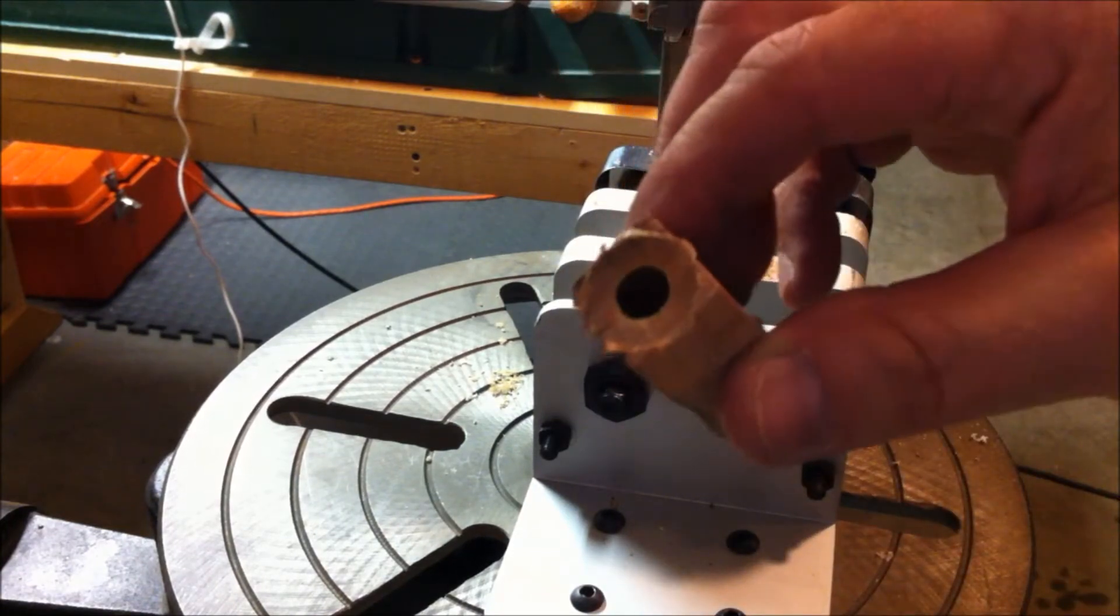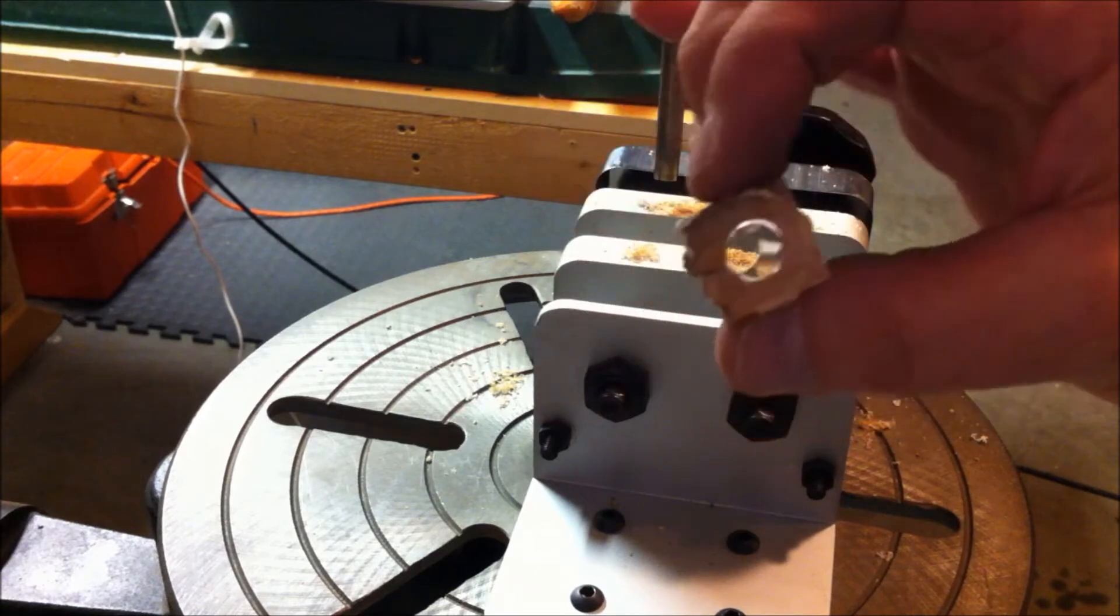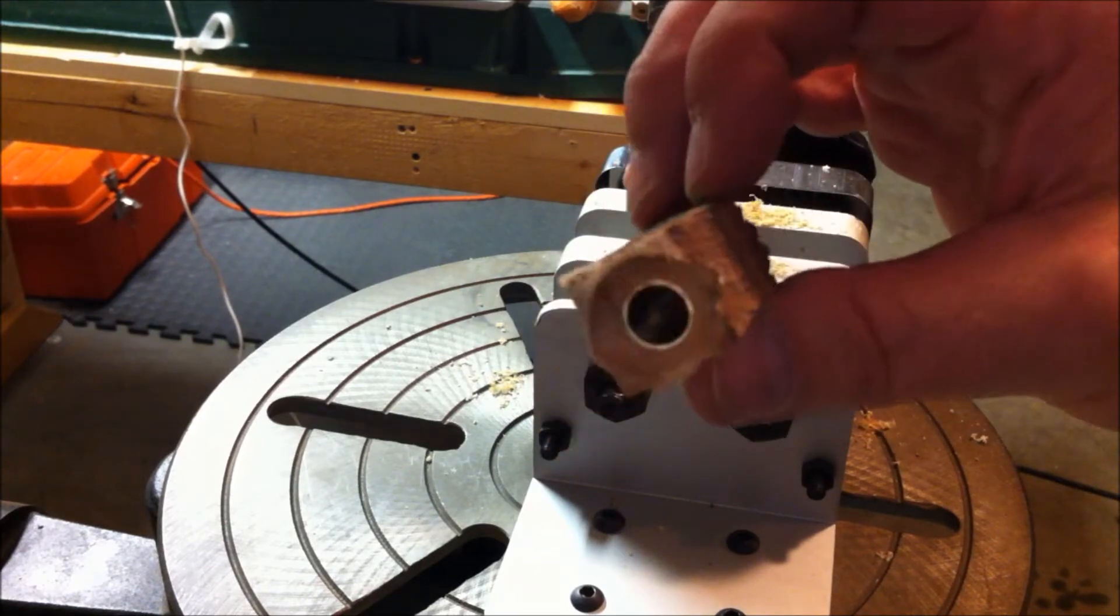Alright, and there we have it. Both sets of blanks are trimmed up, so let's move on to the next step and get these blanks on the lathe and get them turned.